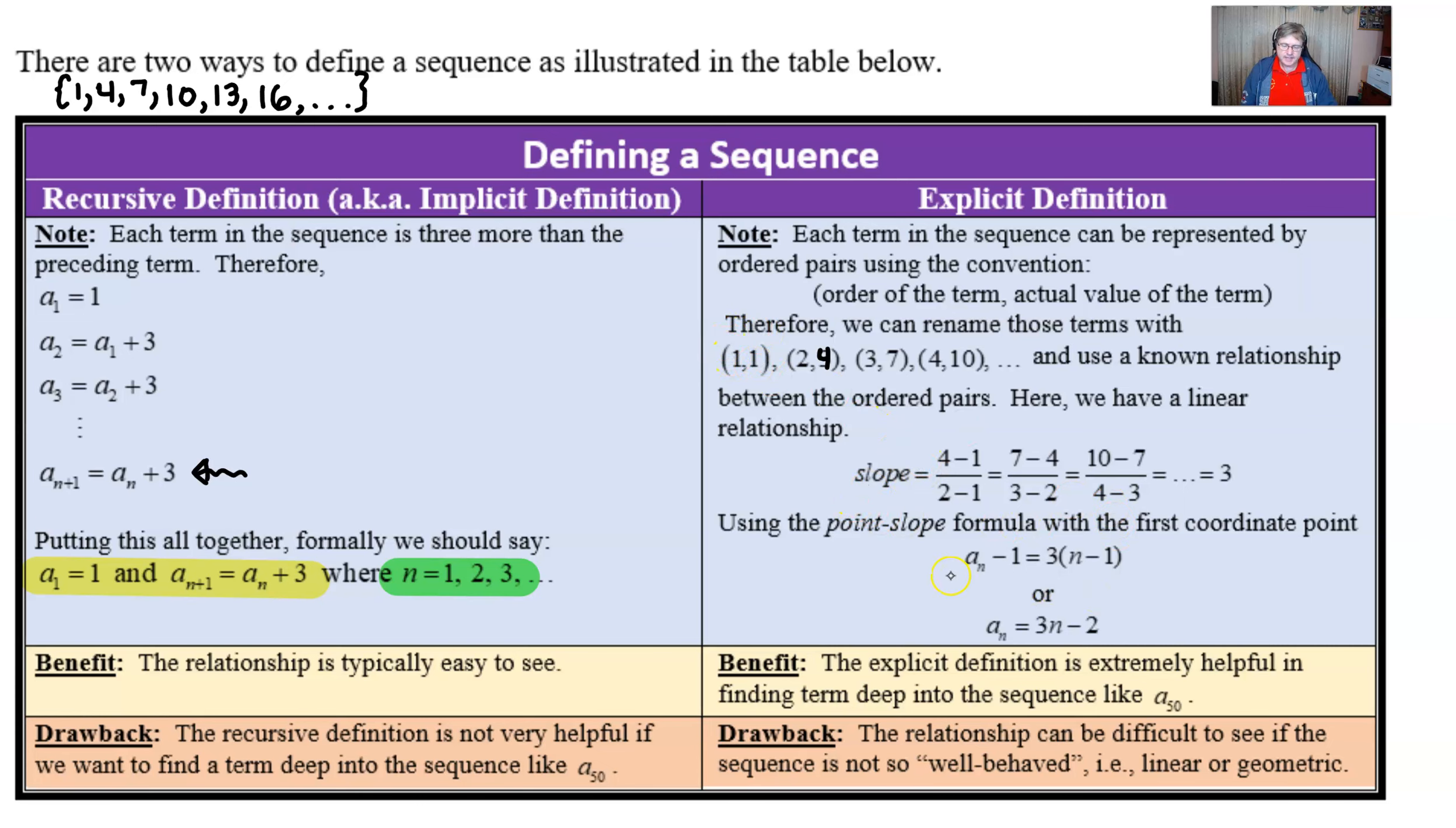And then you just pair that with whichever point you want to use. I chose the first one, and boom, you've got your expression. Notice I use a_n in place of the y, and I use n in place of the x. And so you get this nice explicit definition. Looks very different than the recursive.